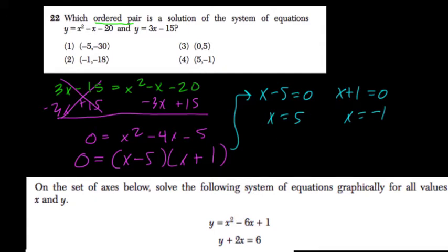This just means that the x values when these two functions meet are 5 and negative 1.